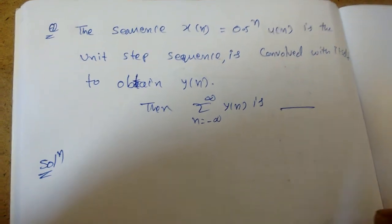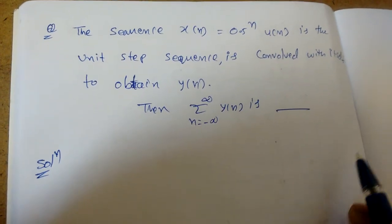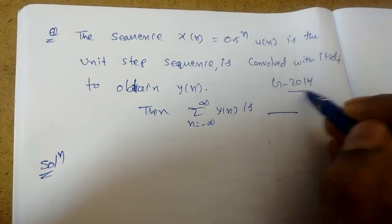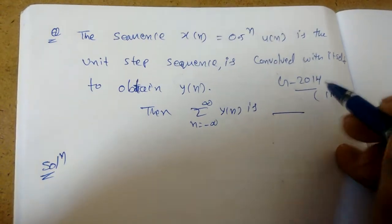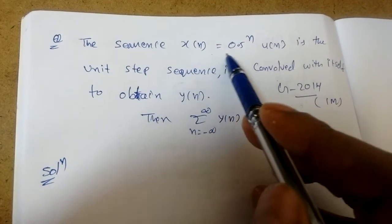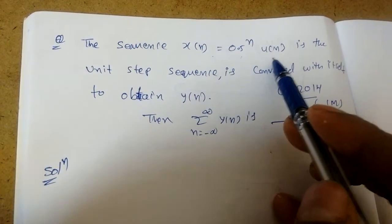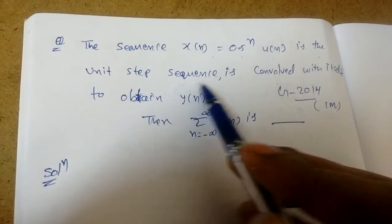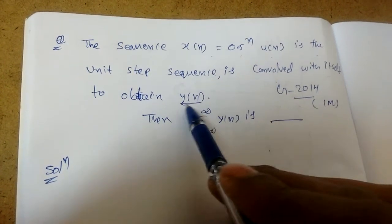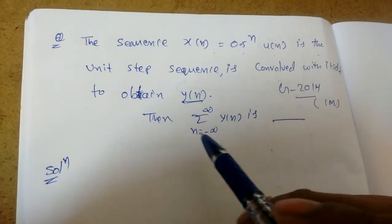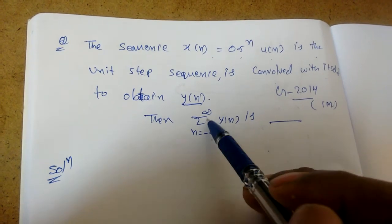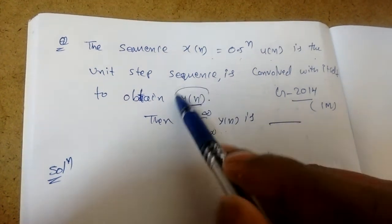In this lecture we will see one more GATE problem — a previous GATE 2014 one-mark problem. The sequence x(n) = (0.5)^n * u(n), where u(n) is the unit step sequence, is convolved with itself to obtain y(n). We need to find the summation from minus infinity to infinity of y(n), so first we need to find y(n).